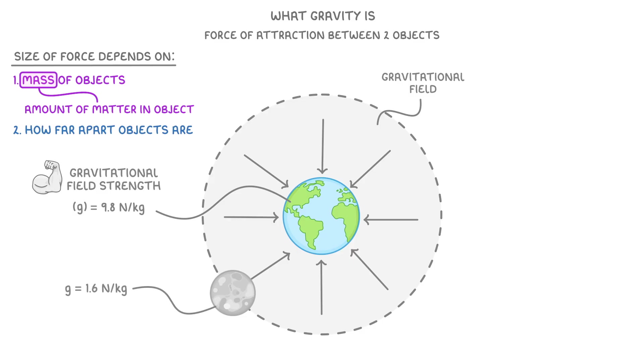While for the Moon, it's just 1.6, because the Moon is a lot smaller than the Earth, so has a weaker gravitational field.